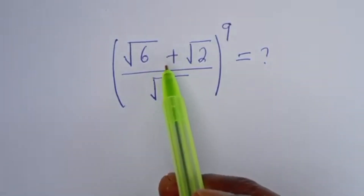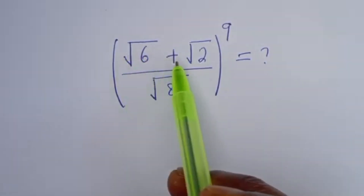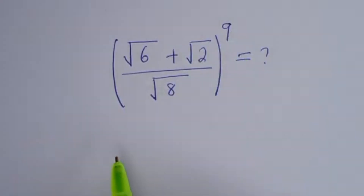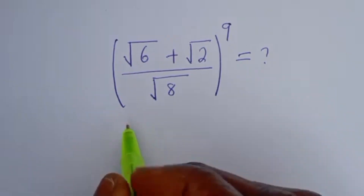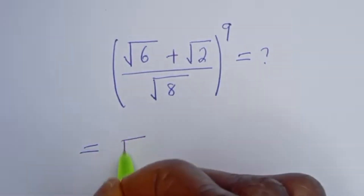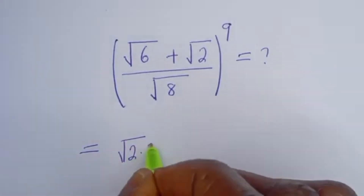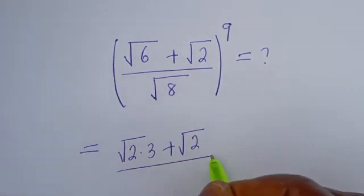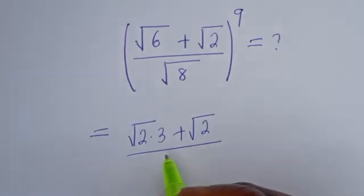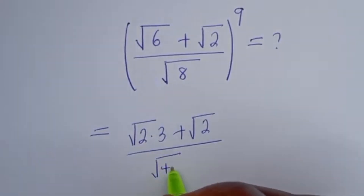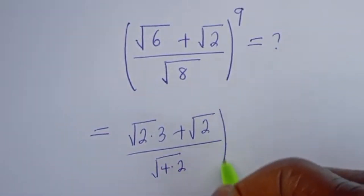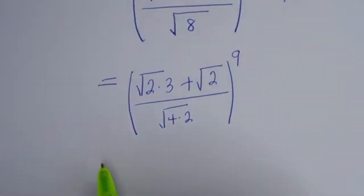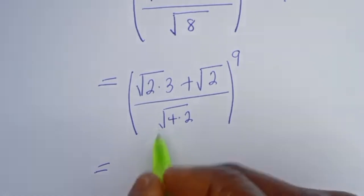Hello! How to simplify this nice math problem: square root of 6 plus square root of 2, divided by square root of 8, all to the power of 9. From here, square root of 6 can be written as square root of 2 multiplied by square root of 3, plus square root of 2, divided by square root of 8, which can be written as square root of 4 multiplied by 2, to the power of 9.